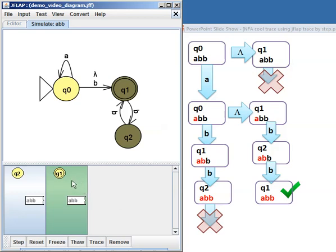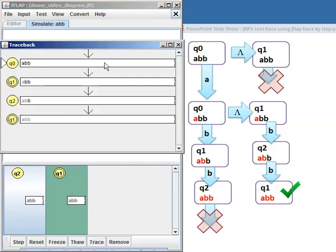If I want, I can click on this path now and say trace, and you can see that it shows me all my movements, but it sort of ignores the lambda jump. So it says, well, I started at Q0 with A, B, B, all of it unprocessed. Then I ended up at Q1 having processed the A, I ended up at Q2 having processed the A and the B, and I ended up at Q1 again having processed all three letters. So it sort of ignores lambda jumps in the trace. It's not quite as useful as a trace, but it's still okay.